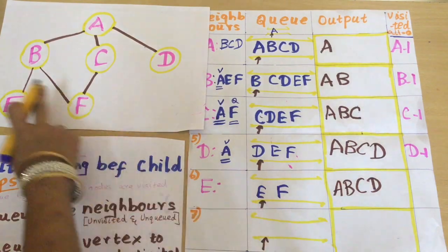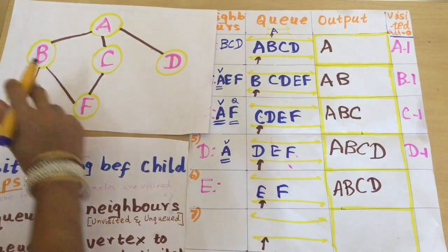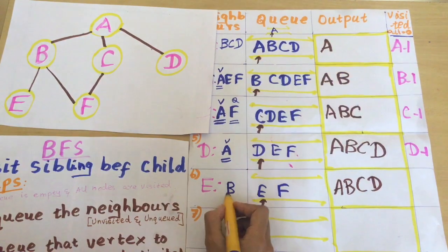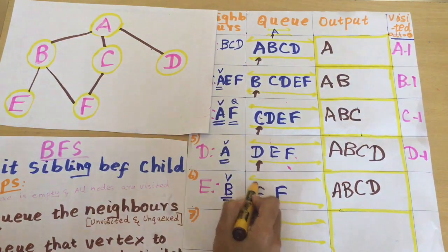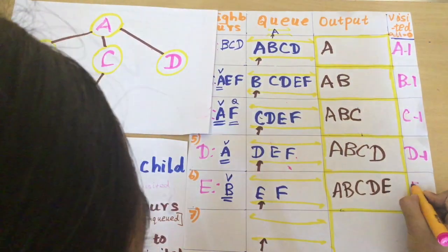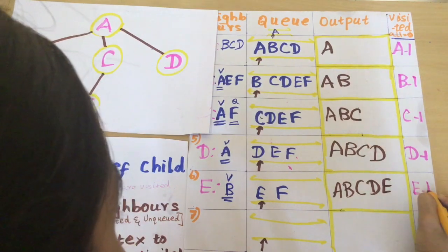The next element pointed by the front is E. The neighbor of E is only B. B is already visited, so I need not enqueue it. I can dequeue E and output it.